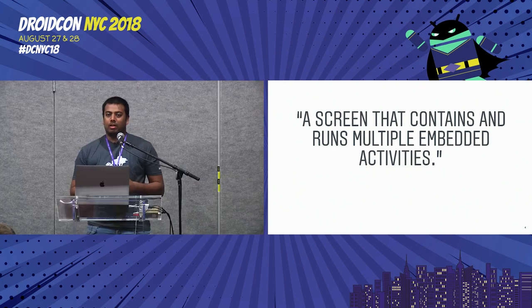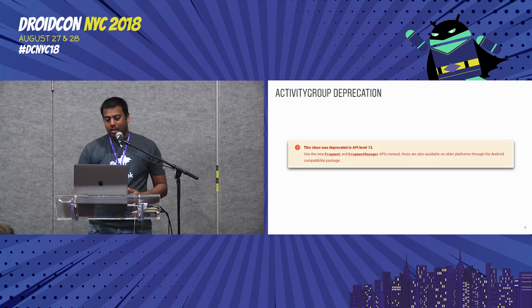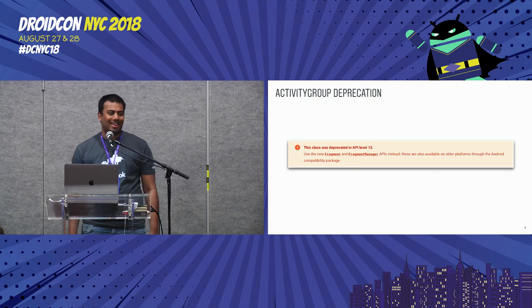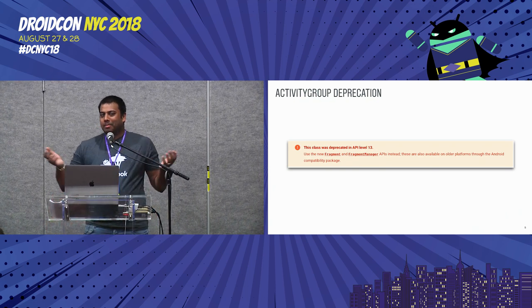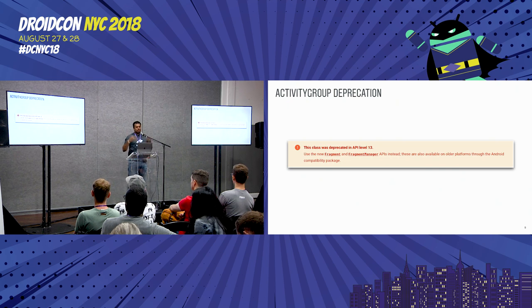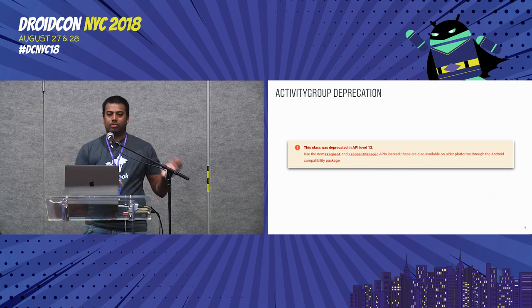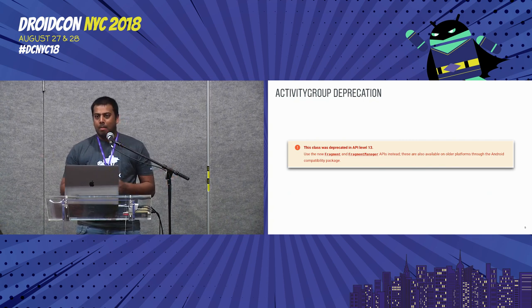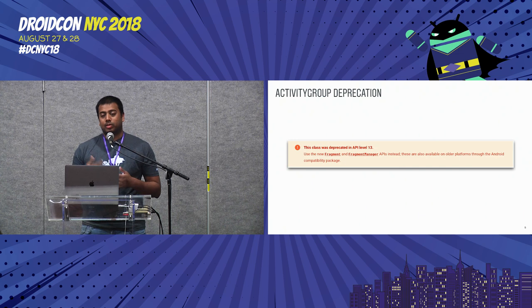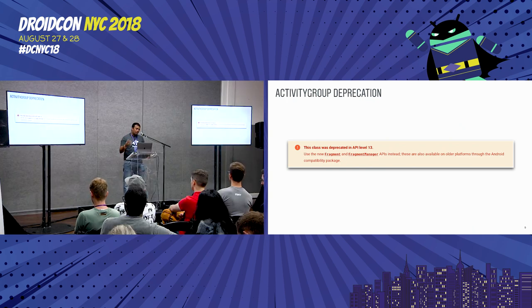In the generation before fragments, we had this concept of using multiple activities on the screen — something I wasn't familiar with. Instagram's first app was built on top of this. When I was reading about it, I also found out that it got deprecated in API 13. We all know why fragments came into existence: with fragments you can have multiple fragments in a single activity to build multi-pane UIs and reuse them. Android moved toward fragments, but the cost to migrate at that point was very high and we didn't see enough benefit, so we prioritized other infrastructure and product changes.